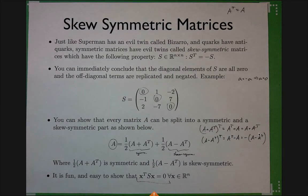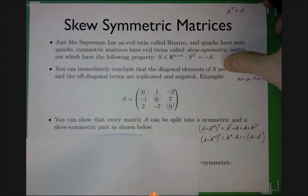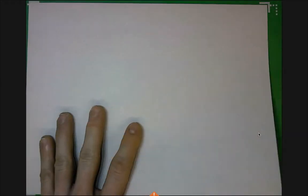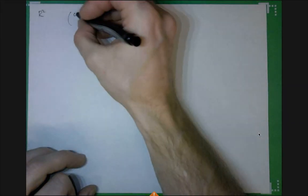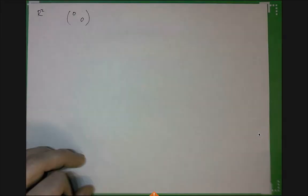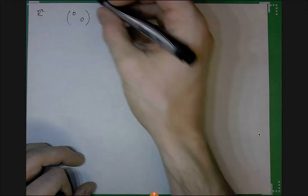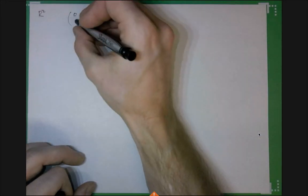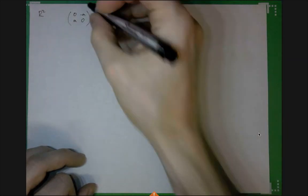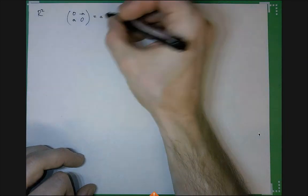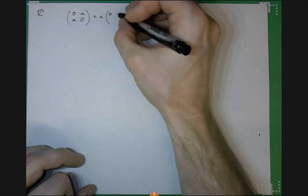Let's take a look at a 2x2 skew symmetric matrix. If I'm in R², all skew symmetric matrices have zeros on the diagonal, and the off-diagonal entries are just minus A and A for some number A. So they really only have one degree of freedom. That's an arbitrary skew symmetric matrix in two dimensions.